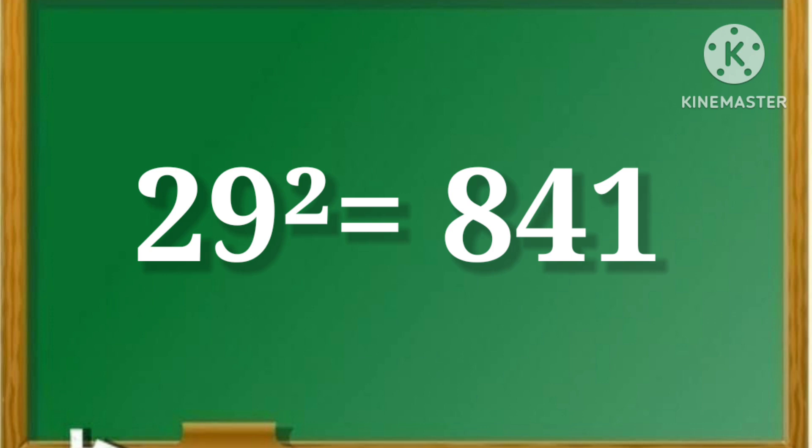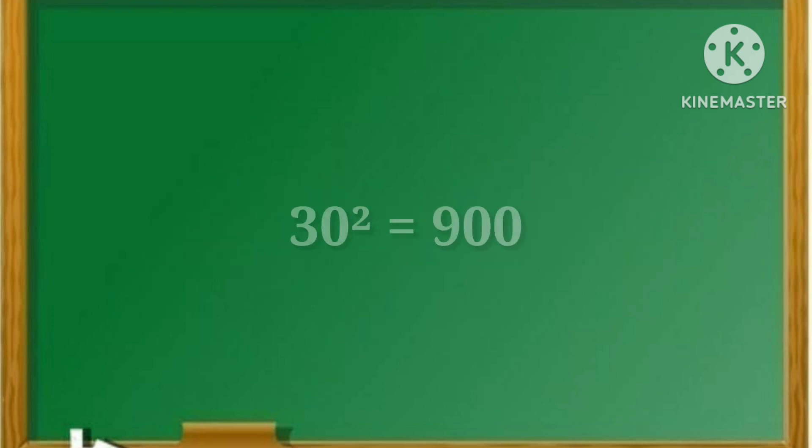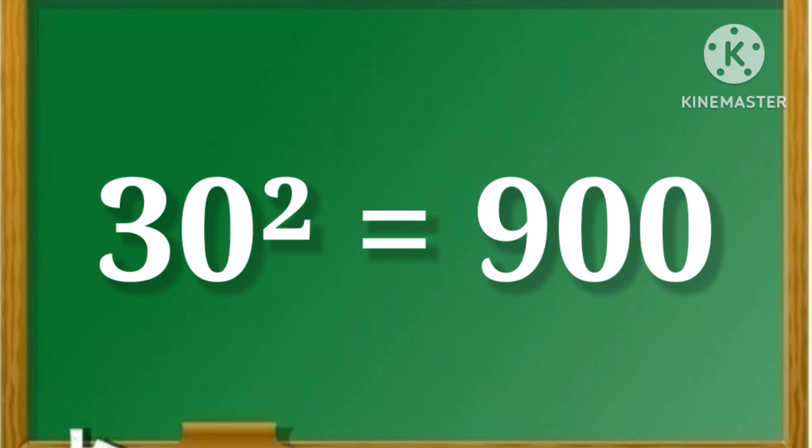29 square is equal to 841. 30 square is equal to 900.